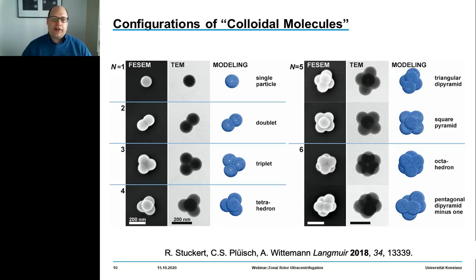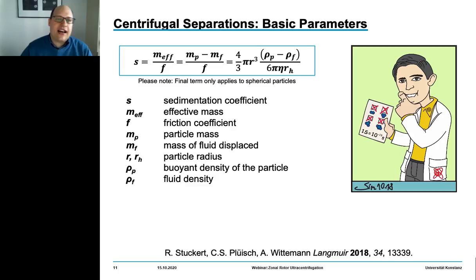The fact that we get a mixture of various species is a direct outcome of the random distribution of particles on the emulsion droplets. Hence, sorting is an issue — and this is where centrifugation enters the scene.